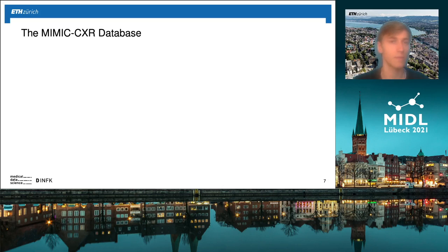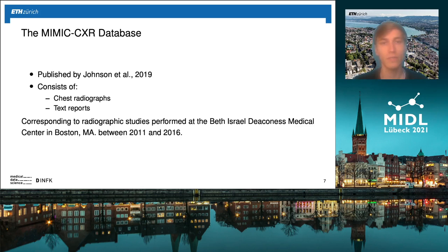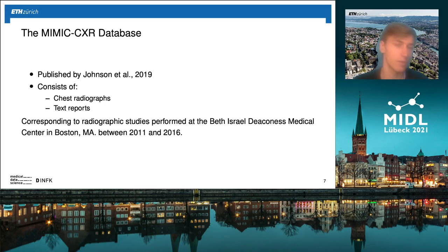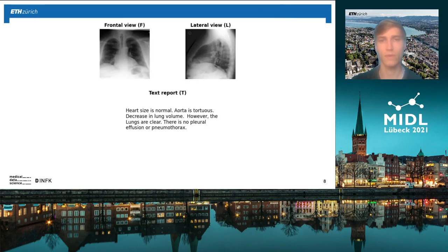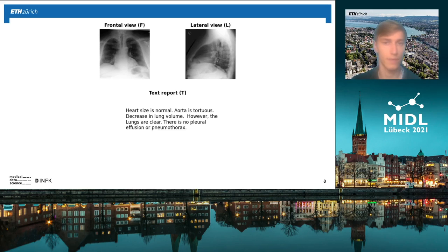We apply this method on the MIMIC-CXR database, published by Johnson et al. in 2019, which consists of chest radiographs and text reports corresponding to radiographic studies performed at the Beth Israel Deaconess Medical Center in Boston between 2011 and 2016. You can see an example with a frontal view radiograph, a lateral view radiograph taken from the side, and the corresponding text report written by a radiologist containing all its findings.